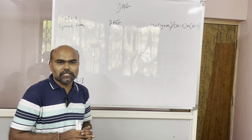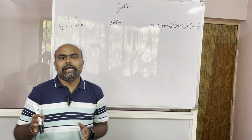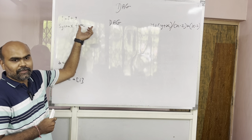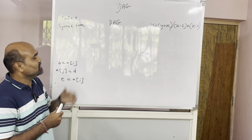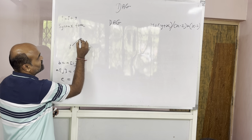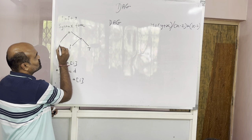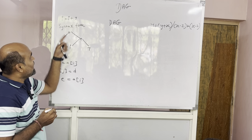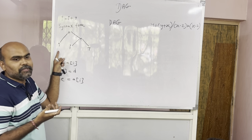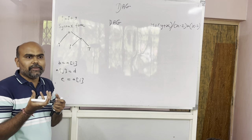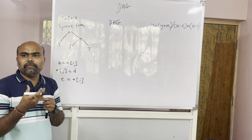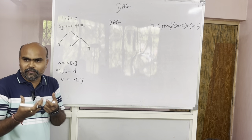Sabse pehle hum dekhenge ki what is the difference between syntax tree and DAG. We have taken an example: i equals to i plus 7. Iska syntax tree nikalenge. So if I write a syntax tree for i plus 7 equals to i, you can see here that jitne time i repeat hua hai, utne time nodes bhi repeat hue hain. It means in a syntax tree, agar aapka expression repeat hota hai, to utne time aapka node bhi repeat hota hai. It takes a lot of memory.